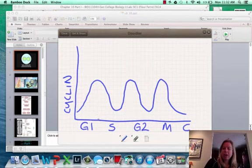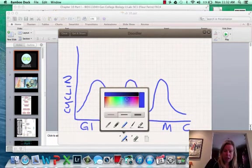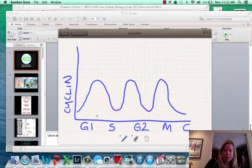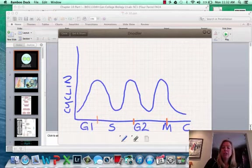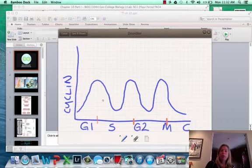So here's our G1S checkpoint. Our G1S checkpoint is like there, our G2M checkpoint is there, and then our spindle checkpoint is there. So you can see at all the checkpoints, it's going to be peaking if everything is okay. If not, it would be too low and it won't get past that checkpoint. So that's how you got to think about it.